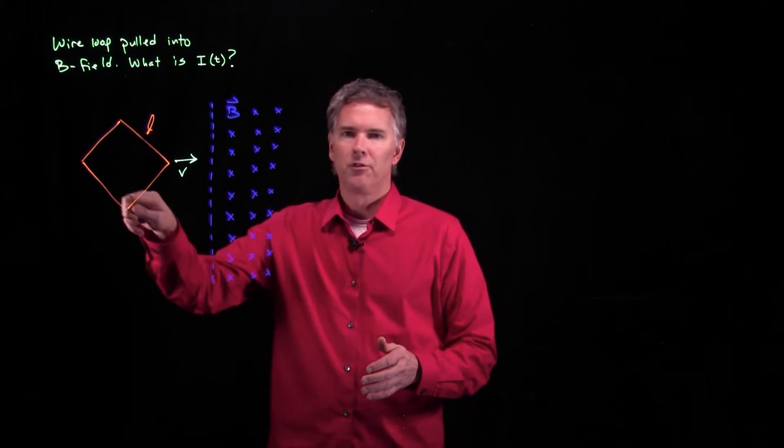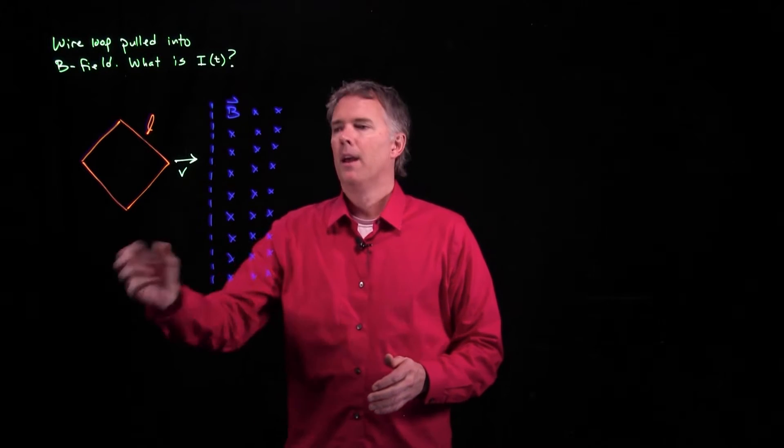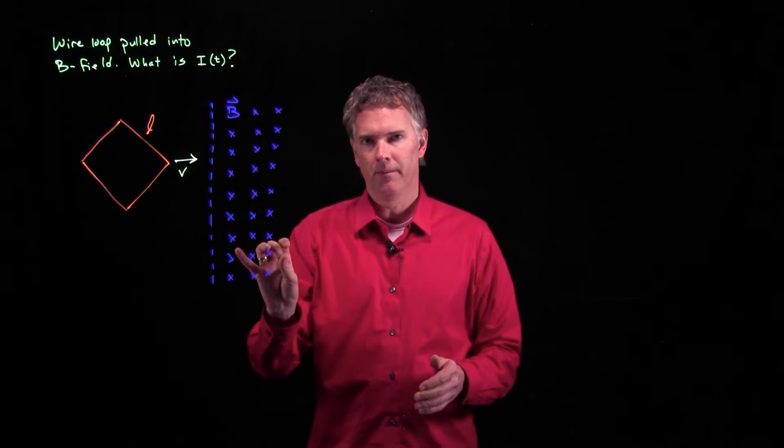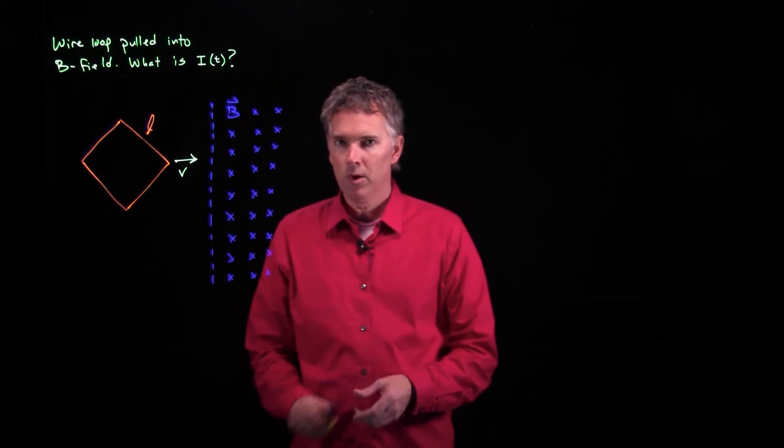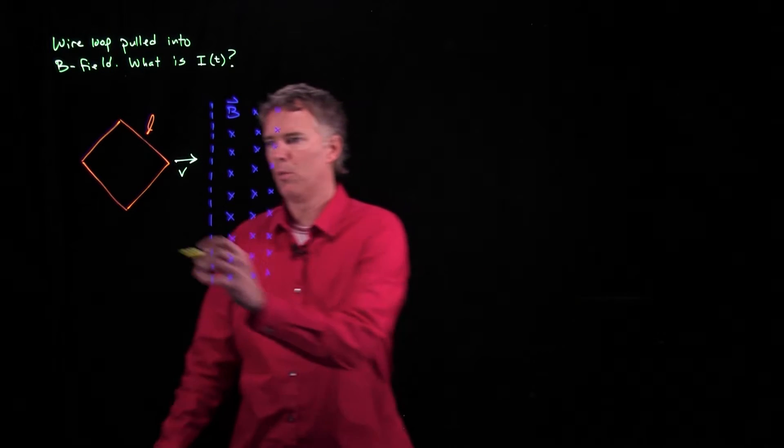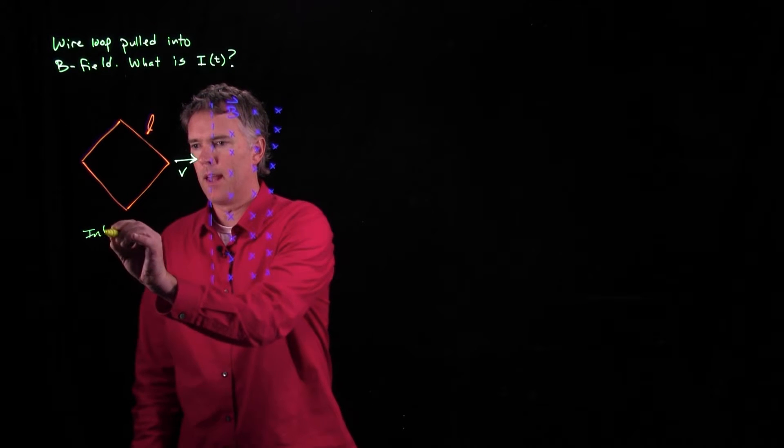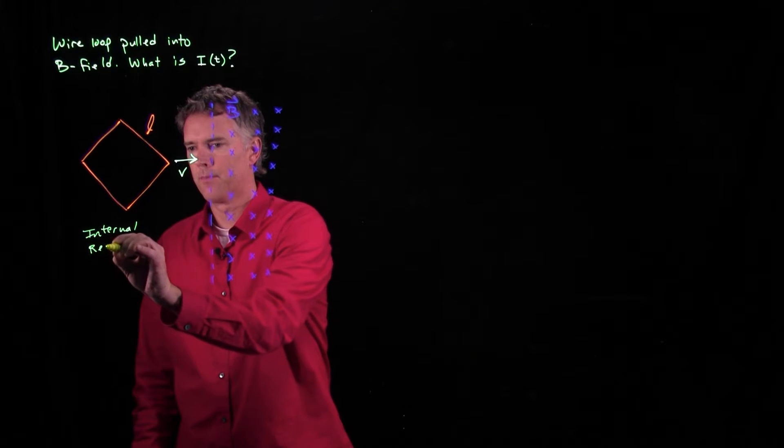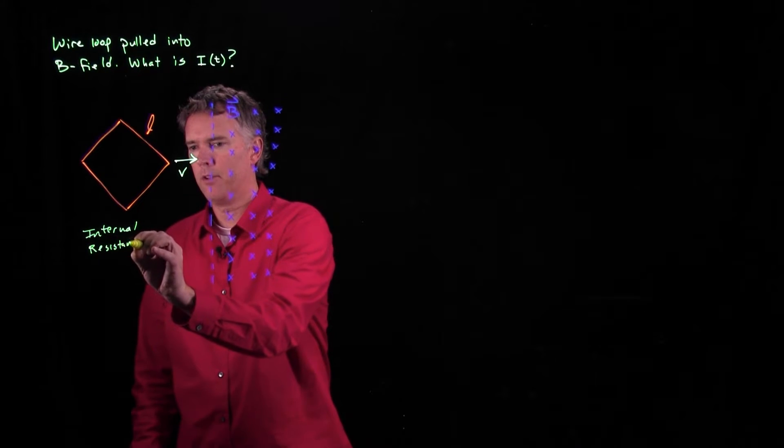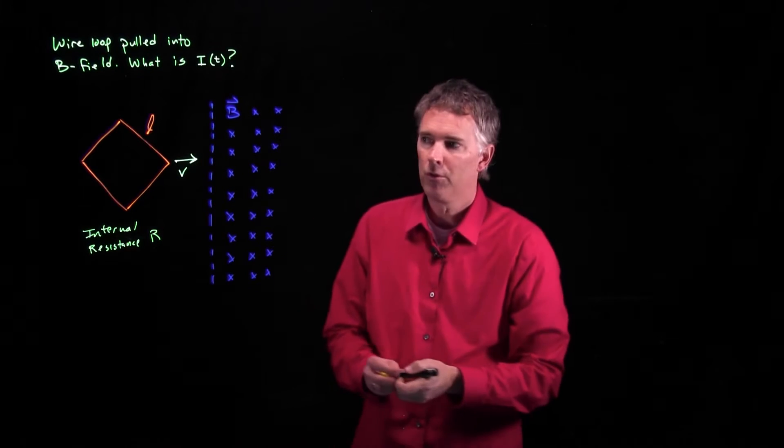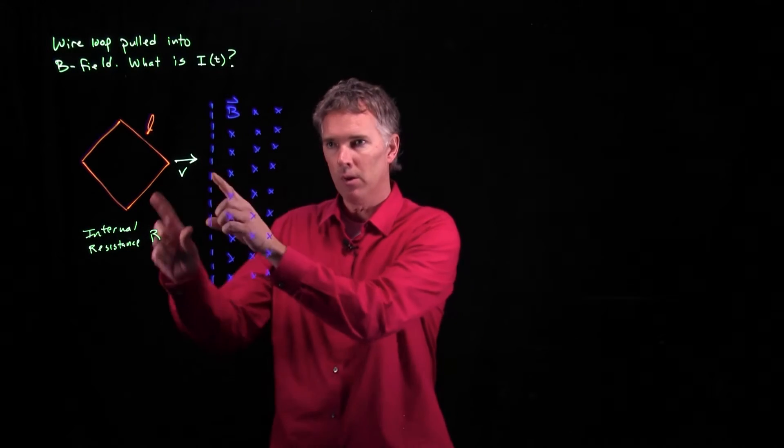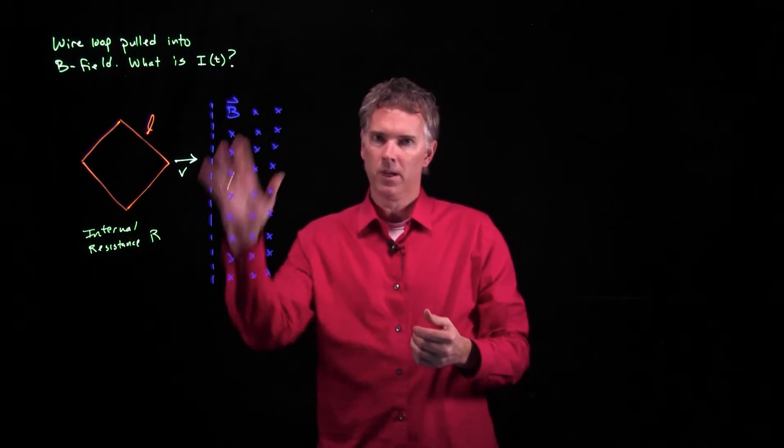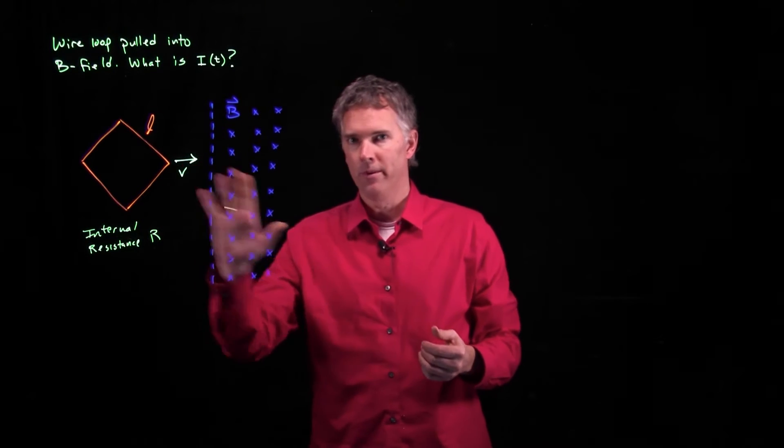Let's say we have a square metal loop and we're going to pull it into a region of B field. Now a square metal loop will have some internal resistance to it and let's call that internal resistance R. And let's see if we can figure out what happens to the current in the loop as it starts to cross this intersection between B field and no B field.